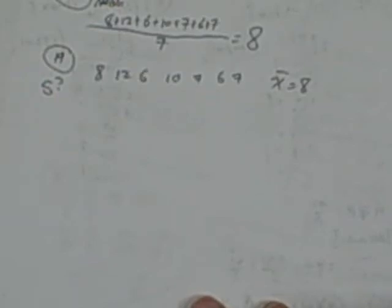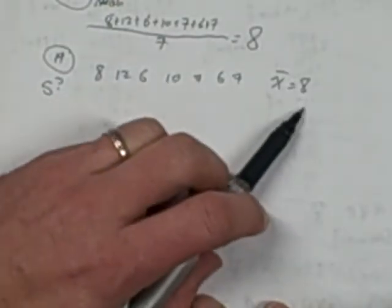This is Math 125, final practice. Problem number 19, you're asked to find the standard deviation for that set that you've been working with. You've already found the mean, which you need.